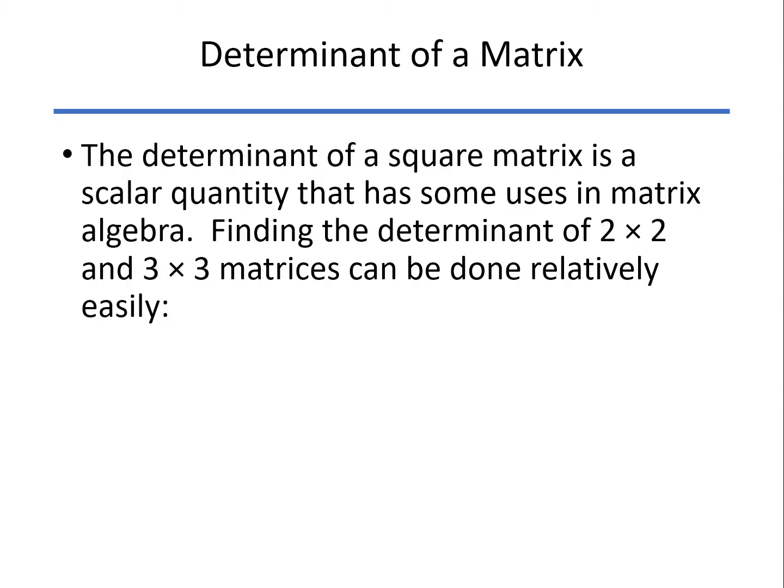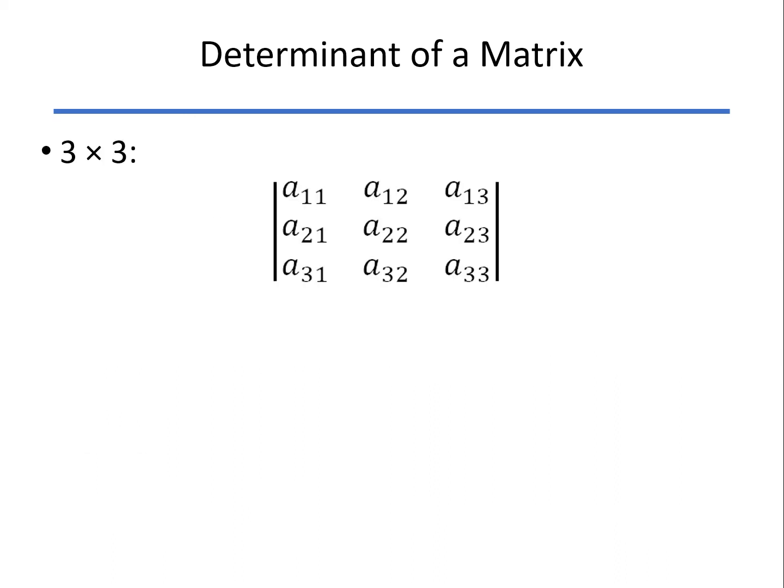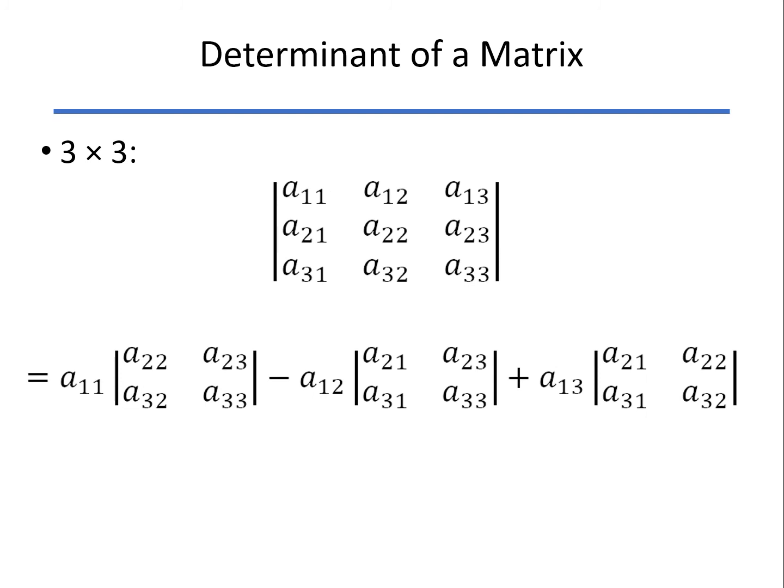The determinant of a matrix is a scalar product. You can do the 2 by 2 and 3 by 3 pretty easily by hand. For 2 by 2, you simply cross multiply: A11 times A22 minus A12 times A21. For 3 by 3, you expand that out by taking the top row A11, A12, and A13. Remember that second term has a negative sign.